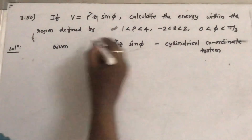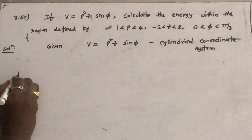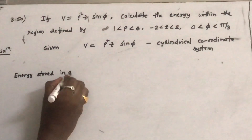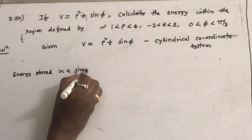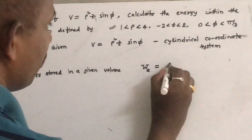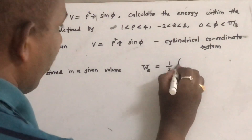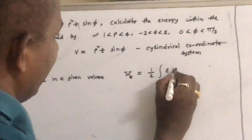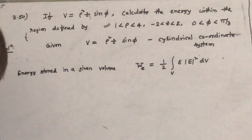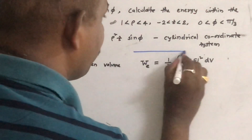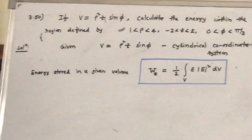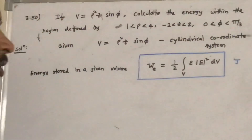What is asked is the energy stored. This is the formula we are going to use: energy stored in a given volume is represented by W_E, that is equal to one-half times the volume integration of ε times the magnitude of E squared dv. We use this relation to solve this problem; the unit is joules.